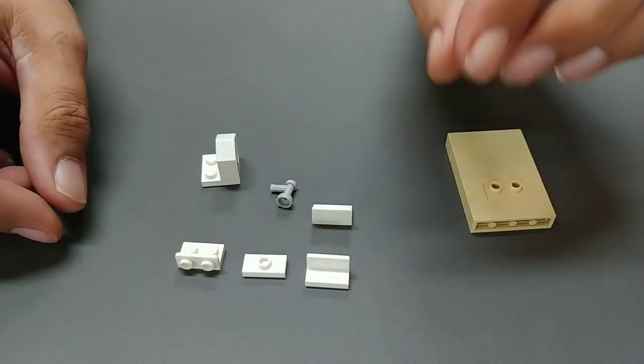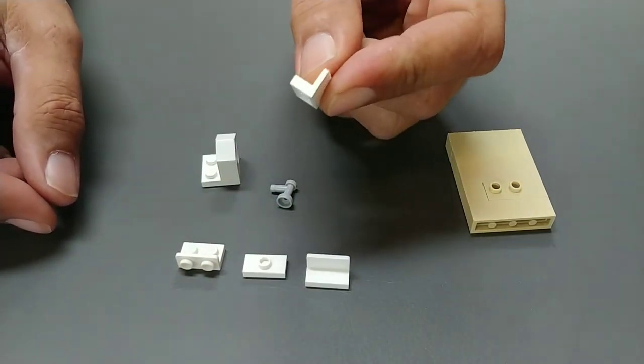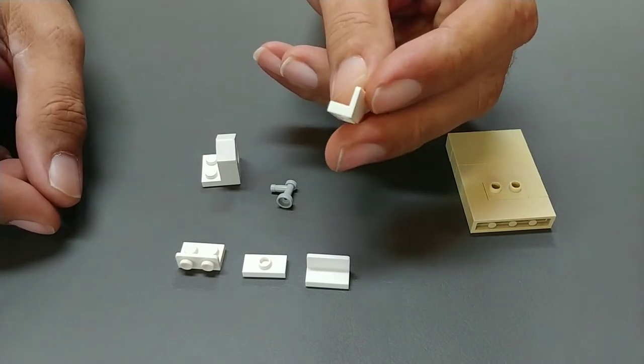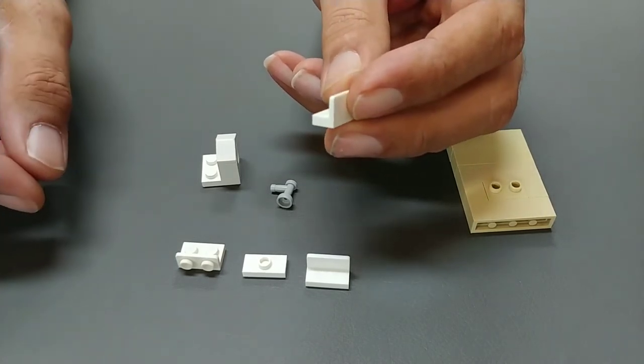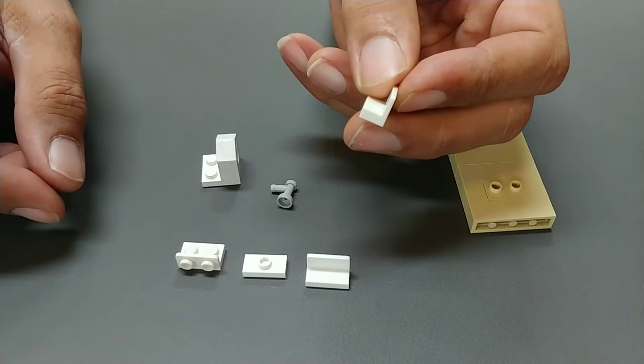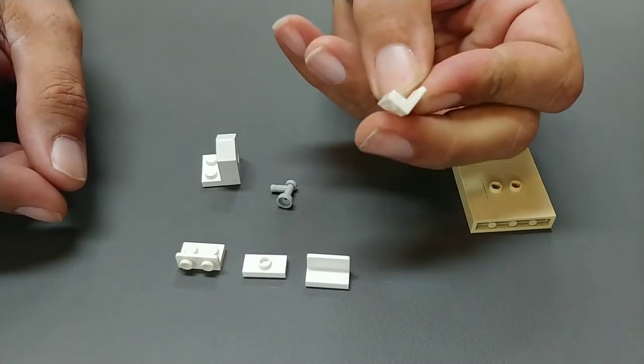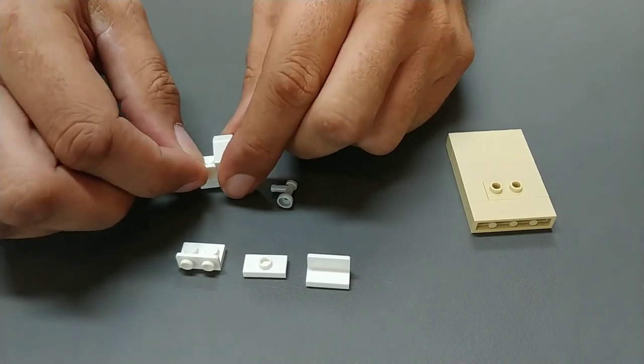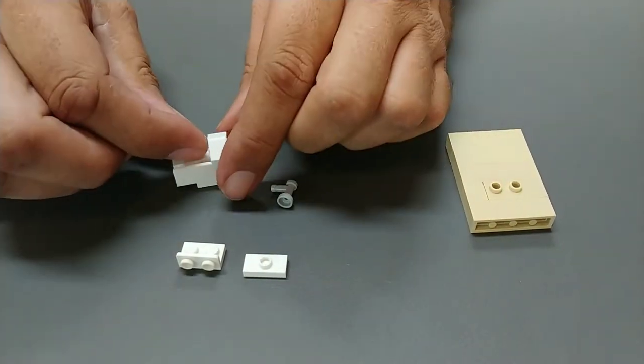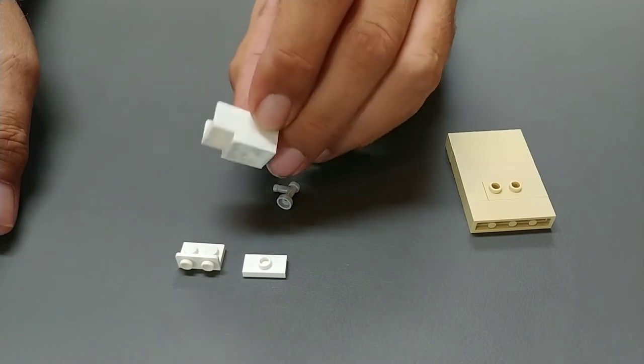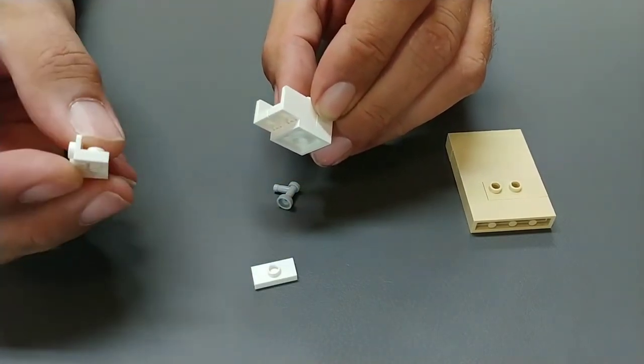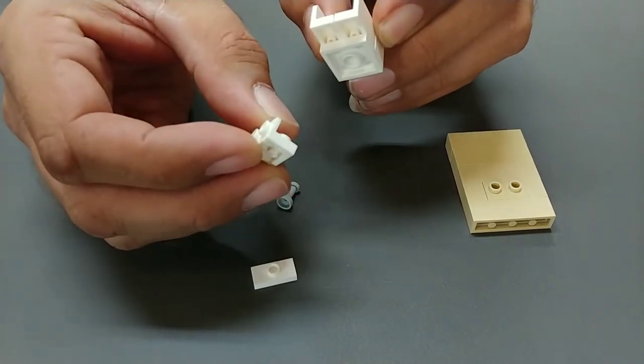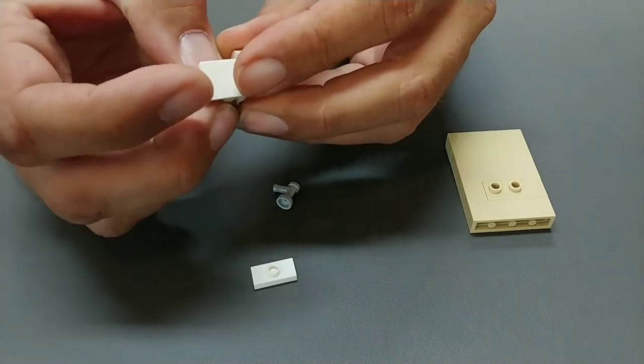Now that we have that we would take our 90 degree tile, I guess we could call it, I'm not really sure what the piece is, it's a 1x2 modified plate is how they have it listed under at BrickLink. But you put each one of those on either side of that, and then you take this modified plate and you click it onto the back of that.